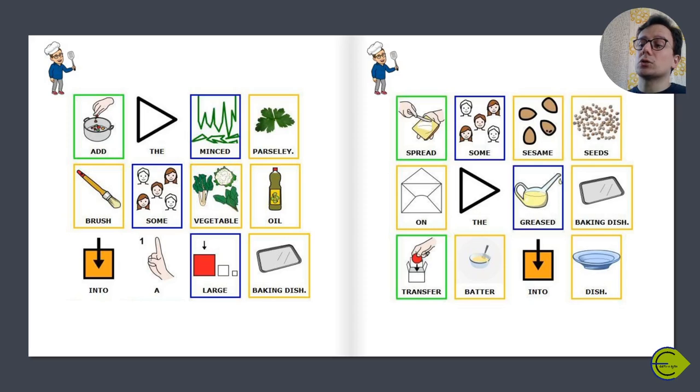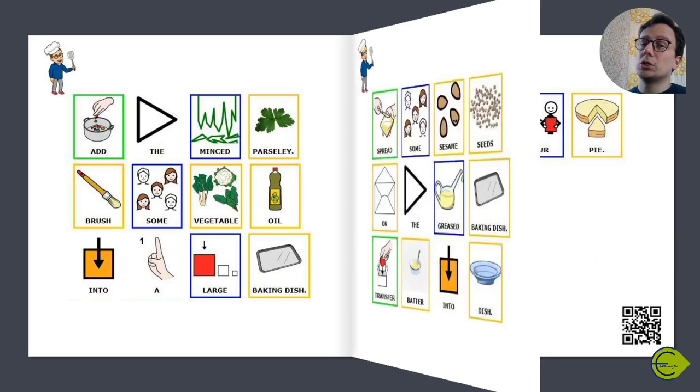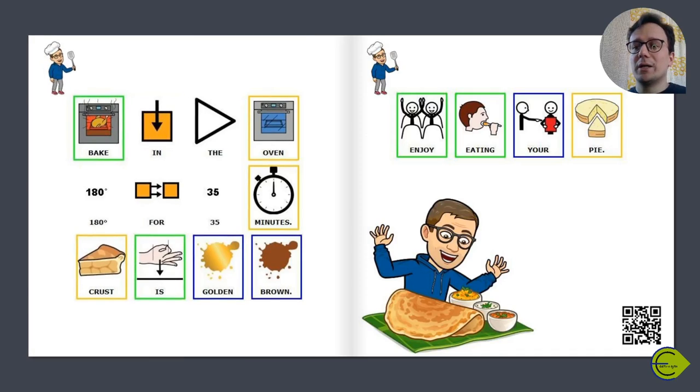Transfer batter into the dish. Bake in the oven at 180 degrees for 35 minutes. The crust should be golden and brown.